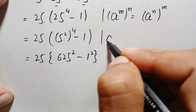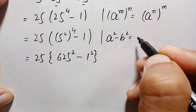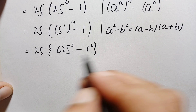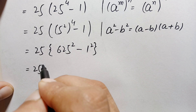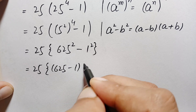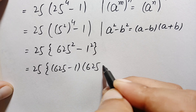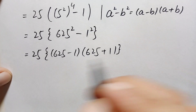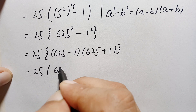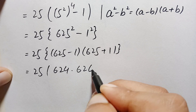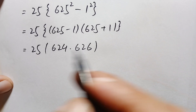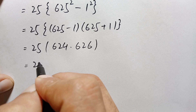Now we will use the algebraic identity a squared minus b squared equals (a minus b) times (a plus b). Applying this identity, the expression becomes 25 times (625 minus 1) times (625 plus 1), which simplifies to 25 times 624 times 626. We need to multiply these numbers without any calculator and without standard multiplication.